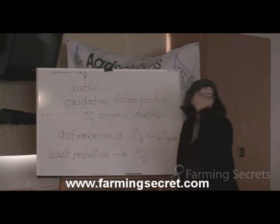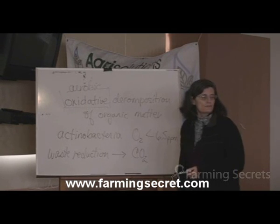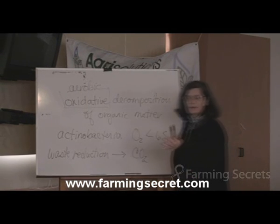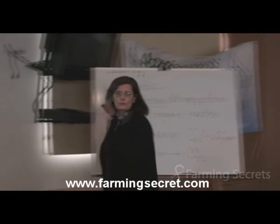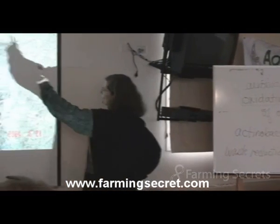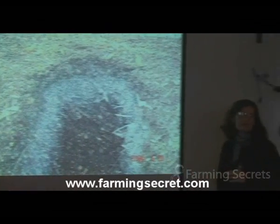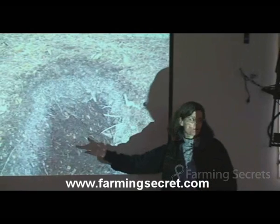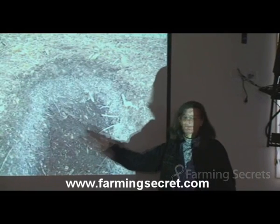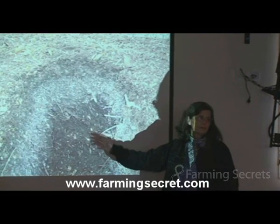You've turned it, and an hour later the temperature's right back up at 65, 70 degrees. You're going anaerobic. So if you're not out there turning it right on time because you put too much high nitrogen material into that pile, you're going to start seeing this problem. Look at the middle of the pile — we've got a problem.